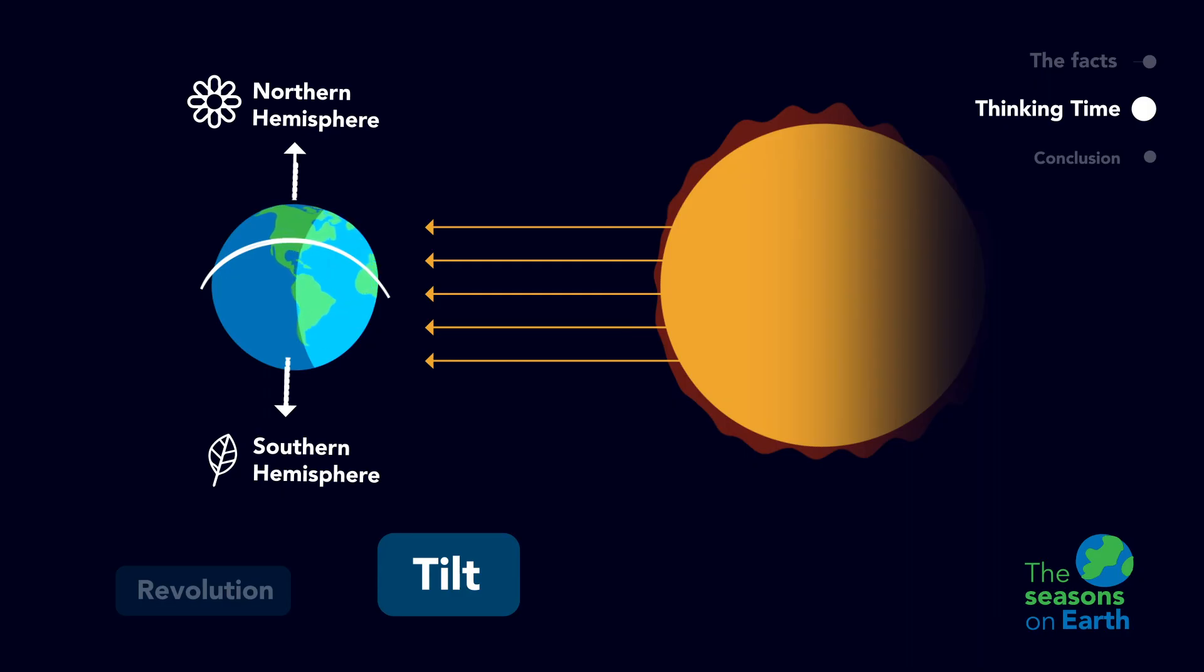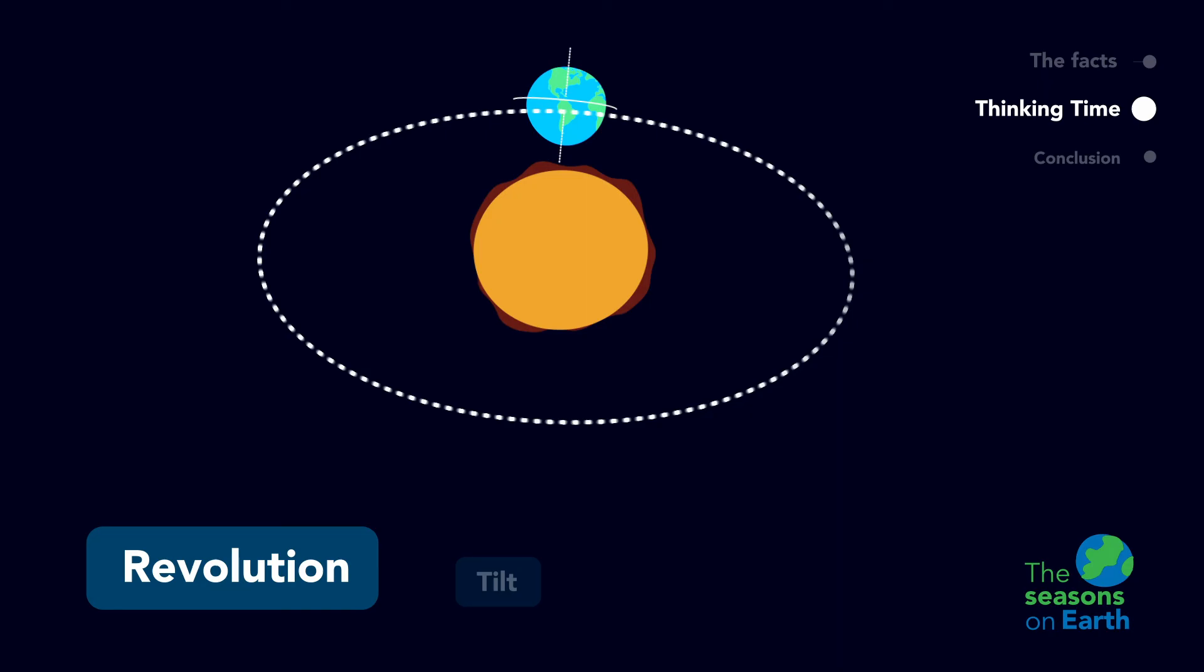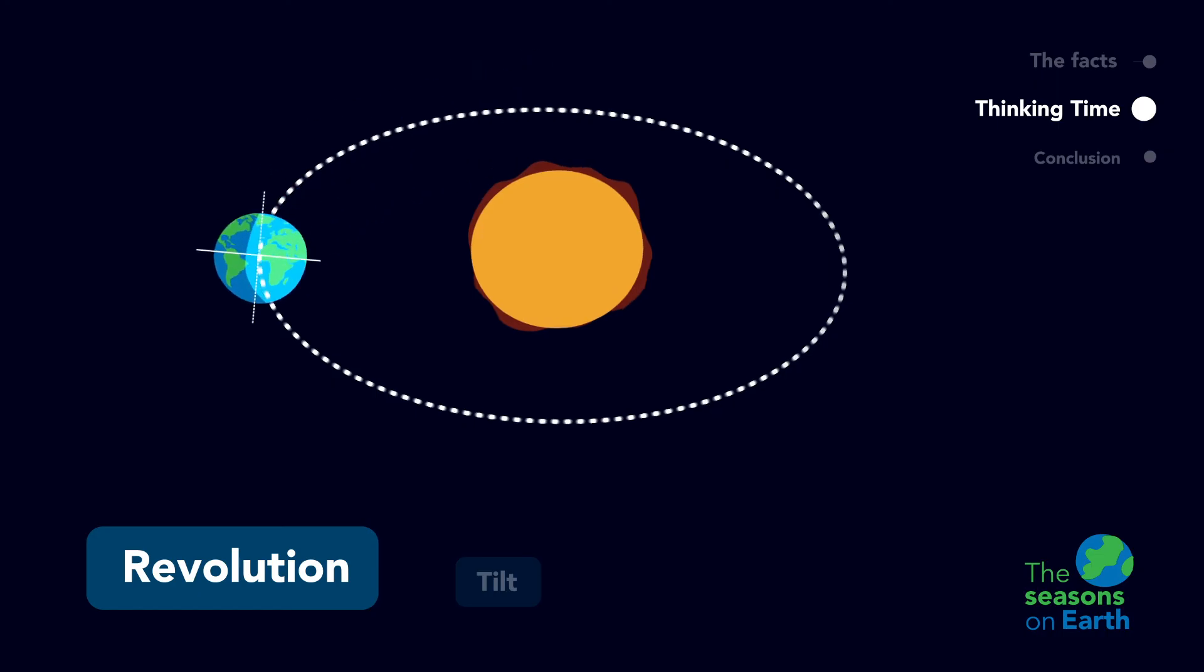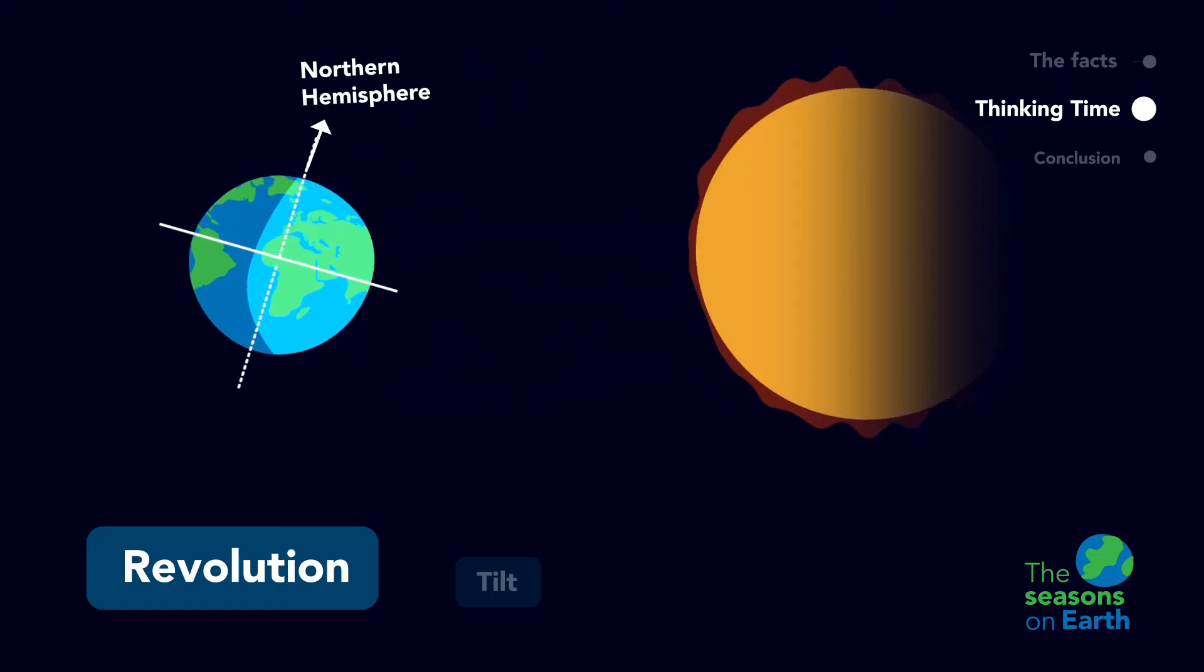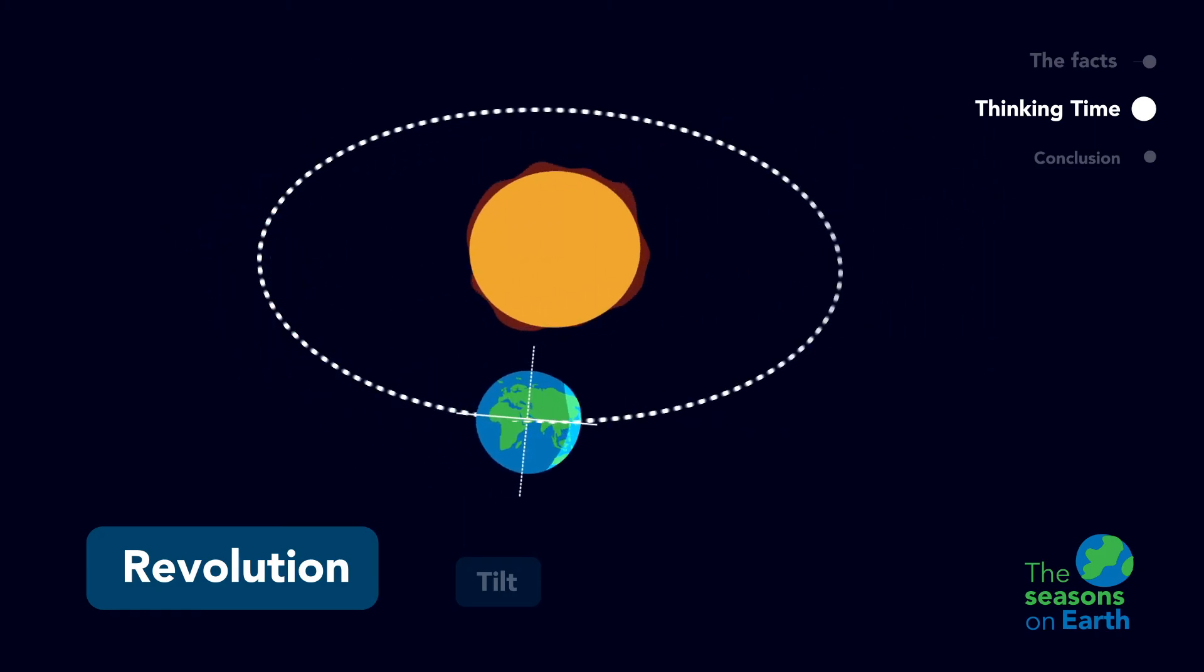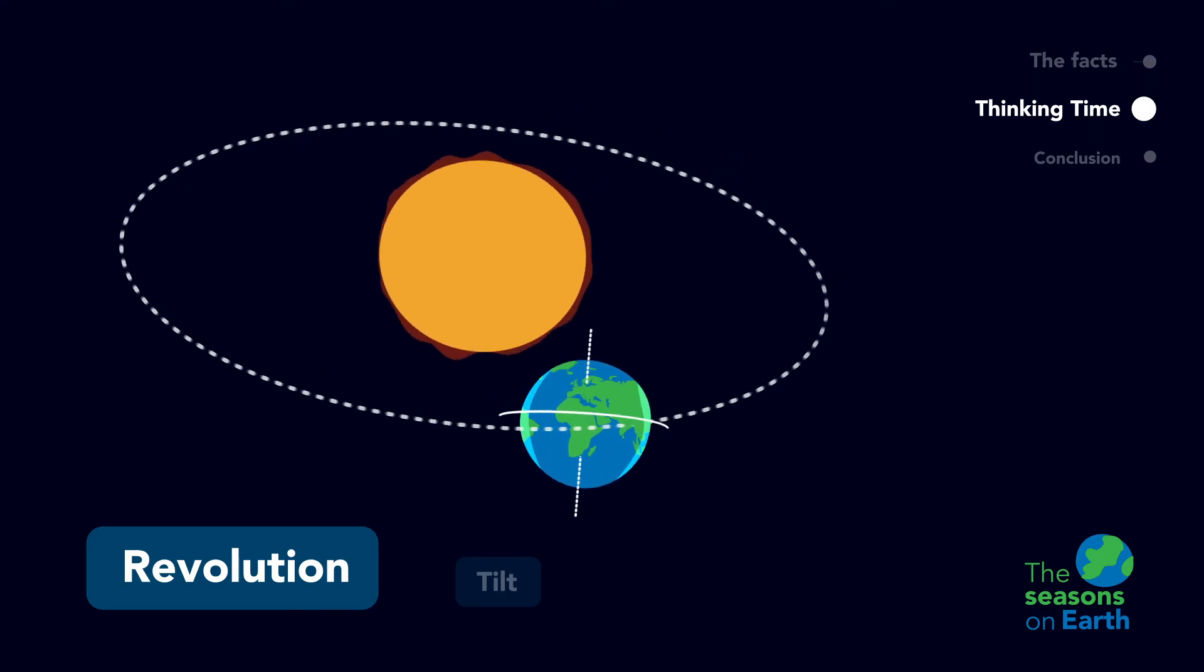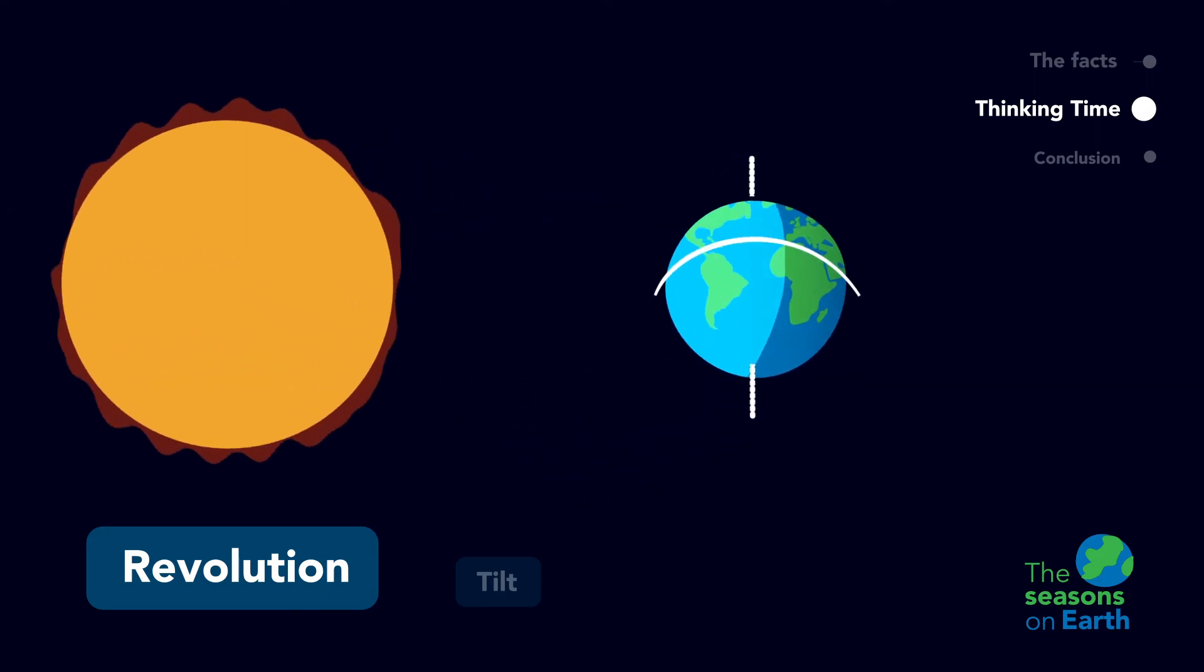Now, based on what you've learned, where will the earth be when the northern hemisphere is experiencing fall? At this point, the northern hemisphere will be tilted towards the sun and experiencing summer. As the earth keeps revolving, it will end up here, where the tilt doesn't cause either hemisphere to tilt towards the sun. At this point, the northern hemisphere will be experiencing fall.